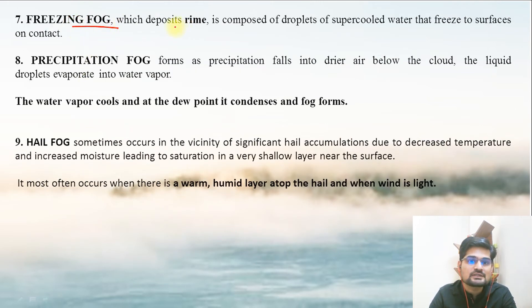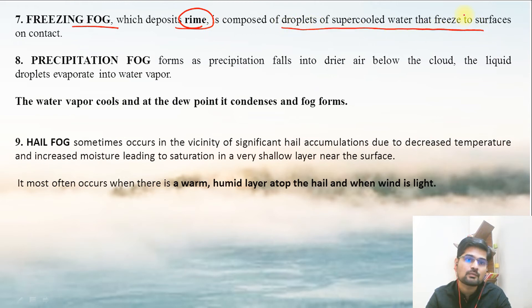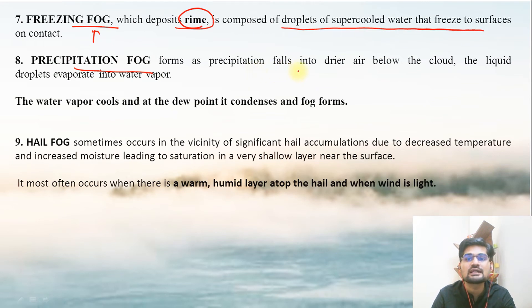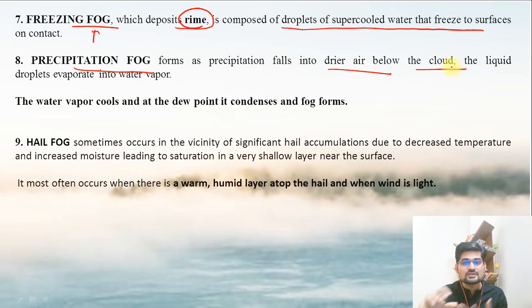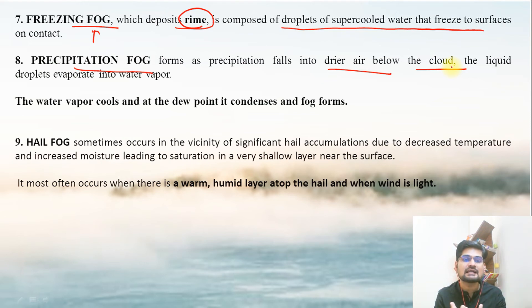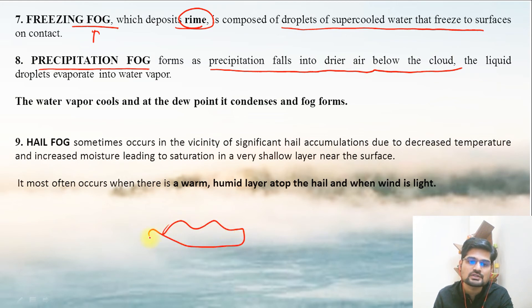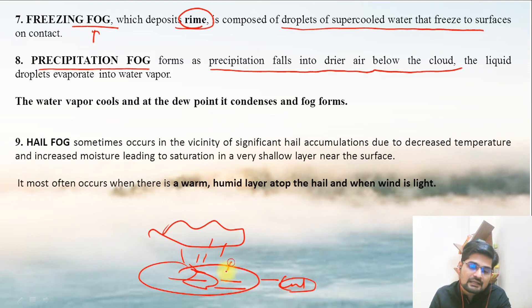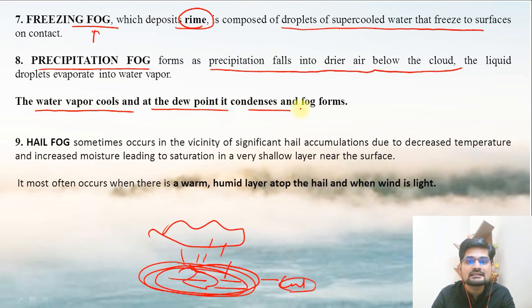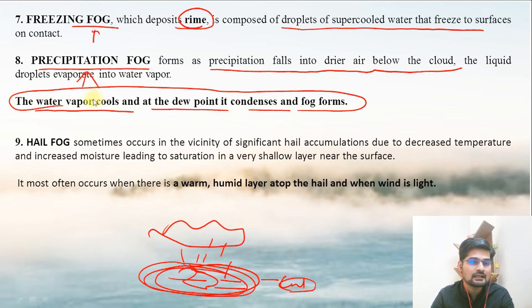Freezing fog deposits rime and is composed of droplets of supercooled water — in areas of supercool conditions, you have freezing fog. Precipitation fog forms when precipitation falls into dry air below the cloud; the liquid droplets evaporate and become vapor again. When precipitation comes down from a cloud into a cool layer beneath, it starts to freeze. As water vapor cools and reaches the dew point, it condenses and forms fog — that is why it is called precipitation fog.